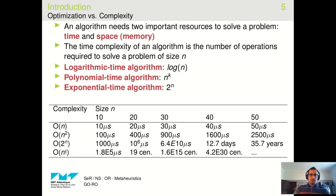This table is an example showing how the number of operations or the time of an algorithm increases by increasing the size of the problem. Consider that each operation takes one microsecond. The last column of the table shows the time of executing an algorithm with the complexity of n factorial. For example, if our problem has size 20, the algorithm takes 19 centuries to solve such a small problem. So now you have a feeling of what we call horrible algorithms.